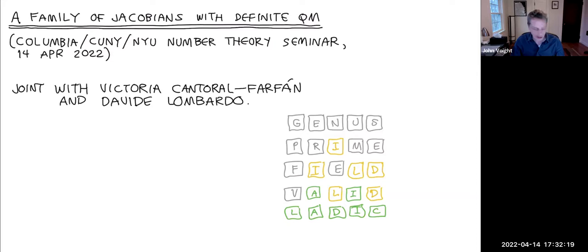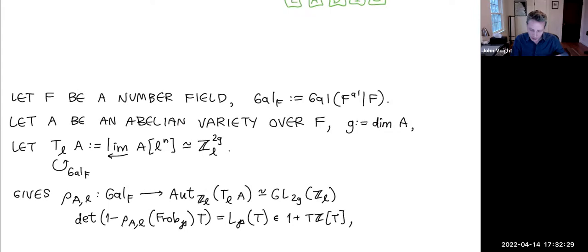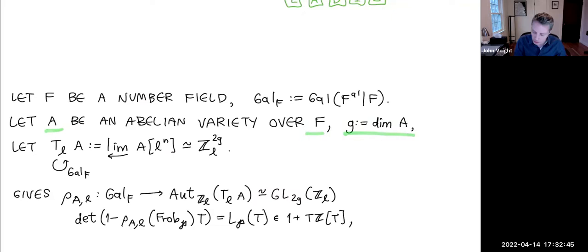Let's get started with the basic setup. The base field we'll work over is F, a number field. We let Gal(F) be its absolute Galois group. We work with an abelian variety A over F, and g will denote the dimension of A — think Jacobians of genus-g curves, though for a while we'll be more general.